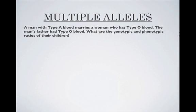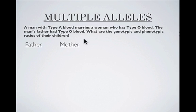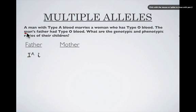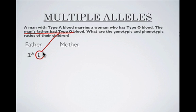Let's look at a genetics problem dealing with blood types. A man with type A blood marries a woman with type O, and the man's father had type O blood. We want to know what kind of children they could have. Here's dad's genotype — he's type A blood, but he carries the allele for O blood. That's because his dad had type O blood, and grandpa donated that allele to dad.